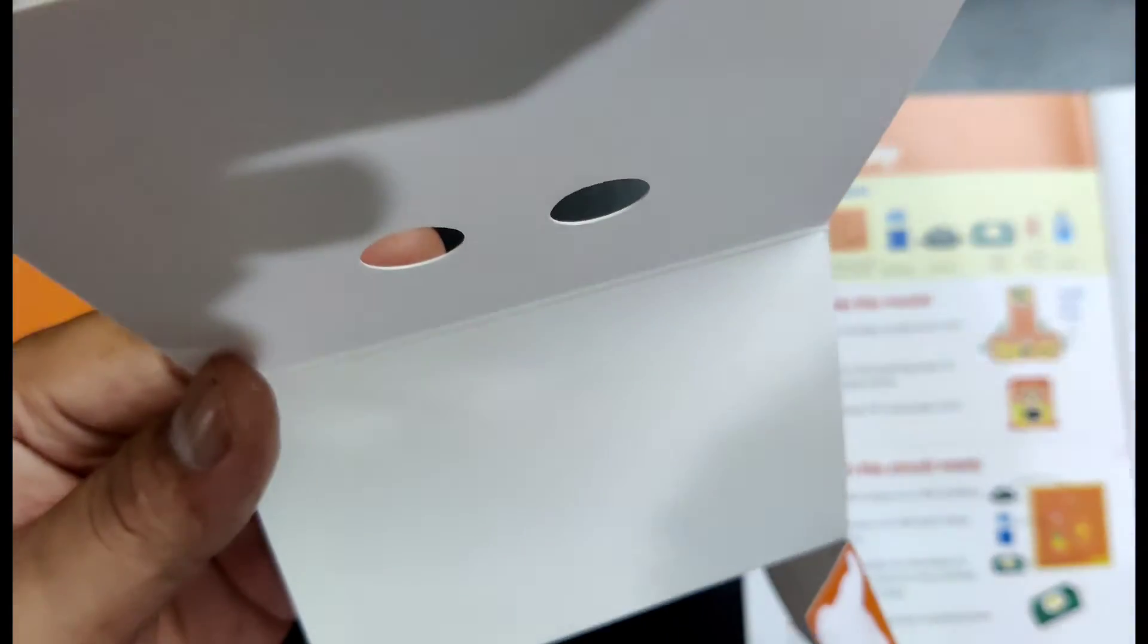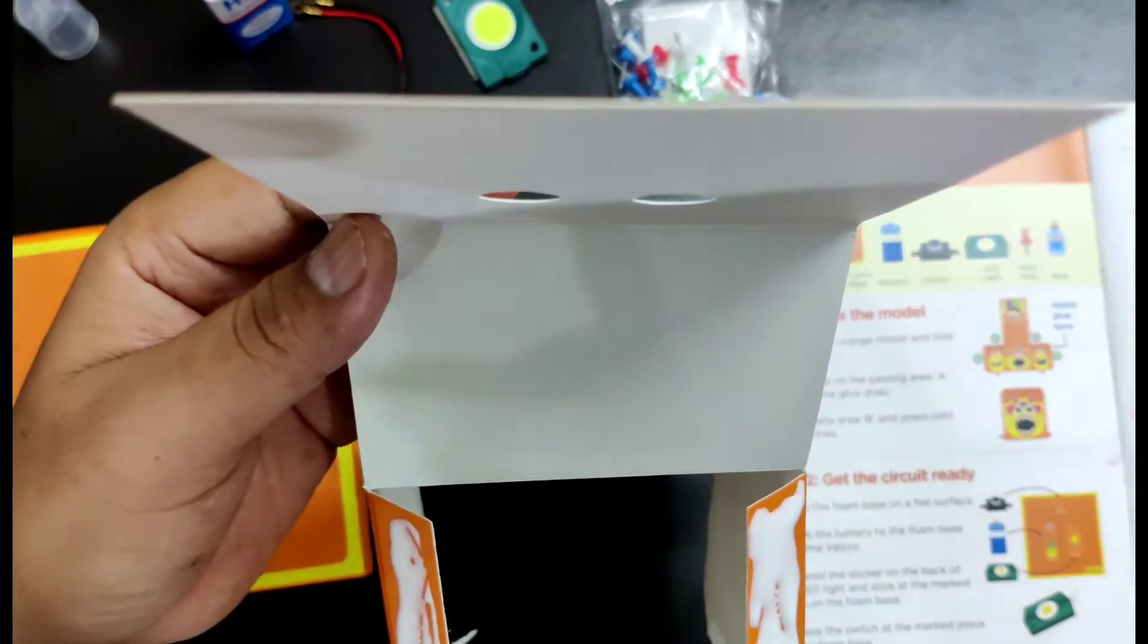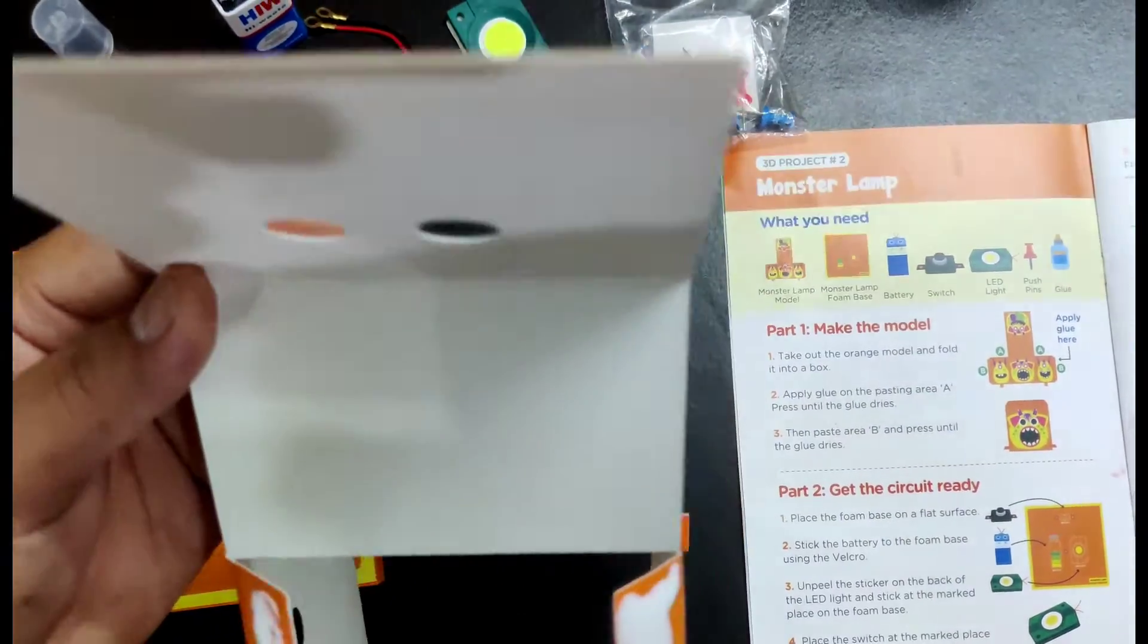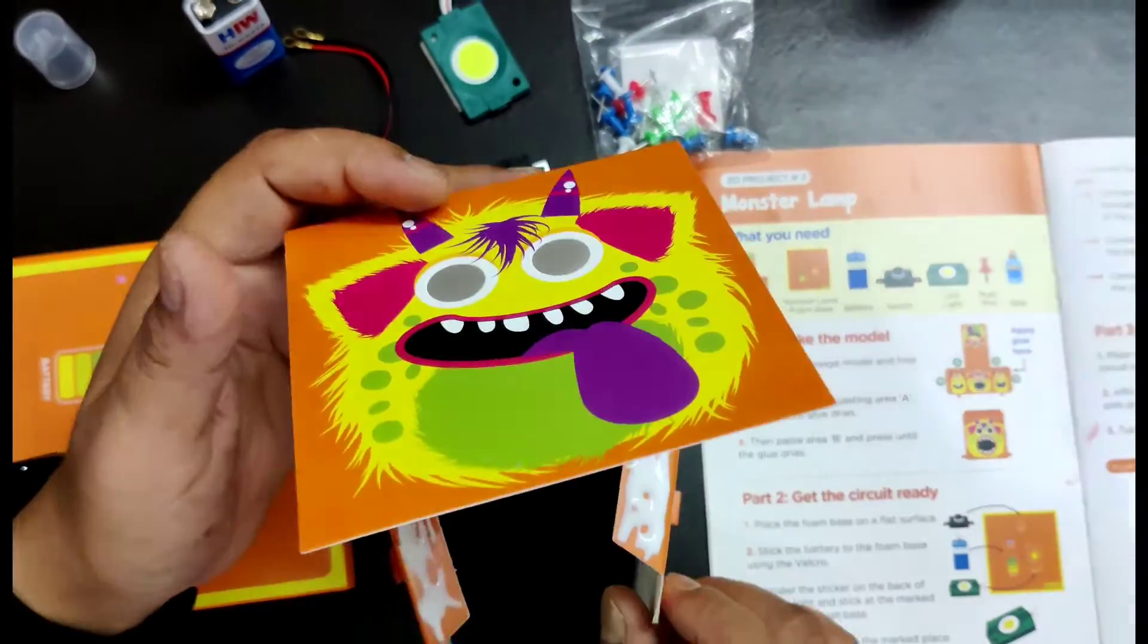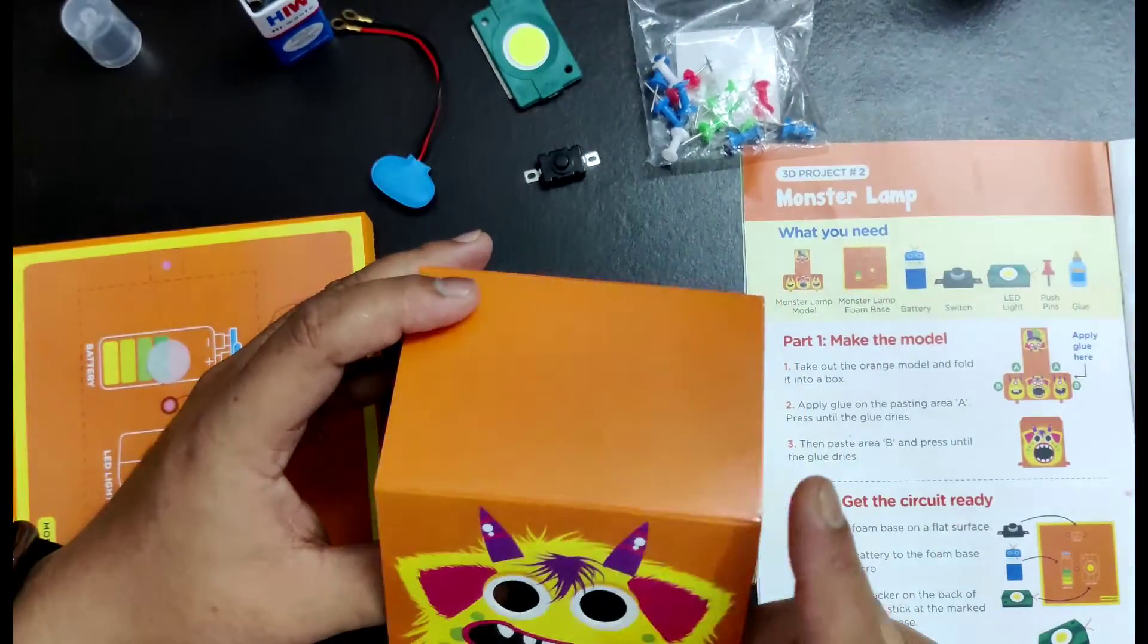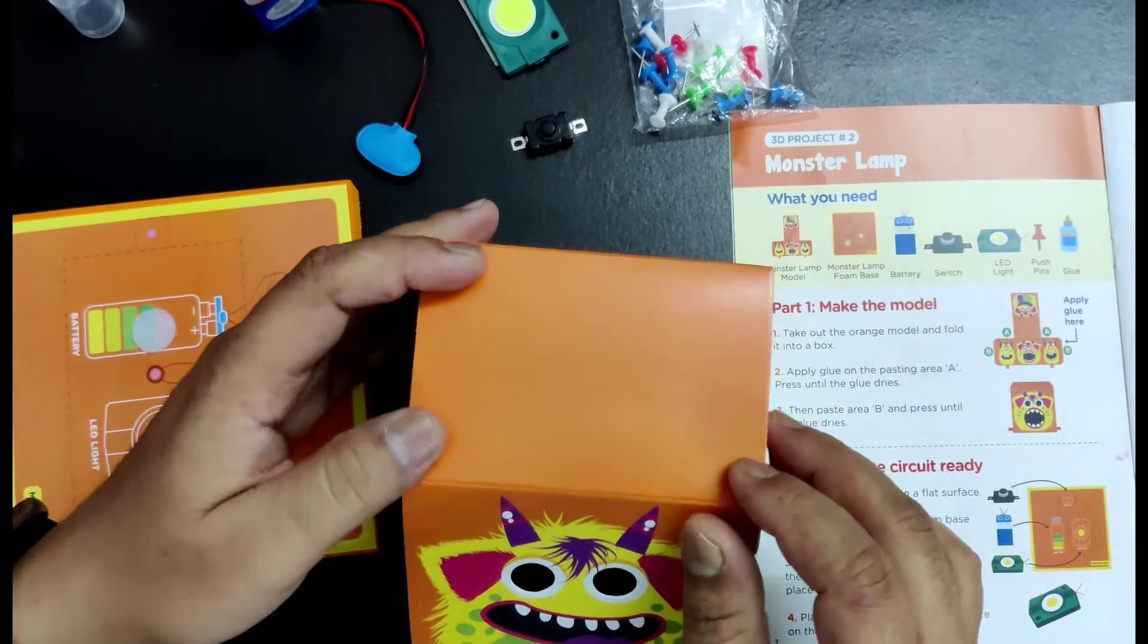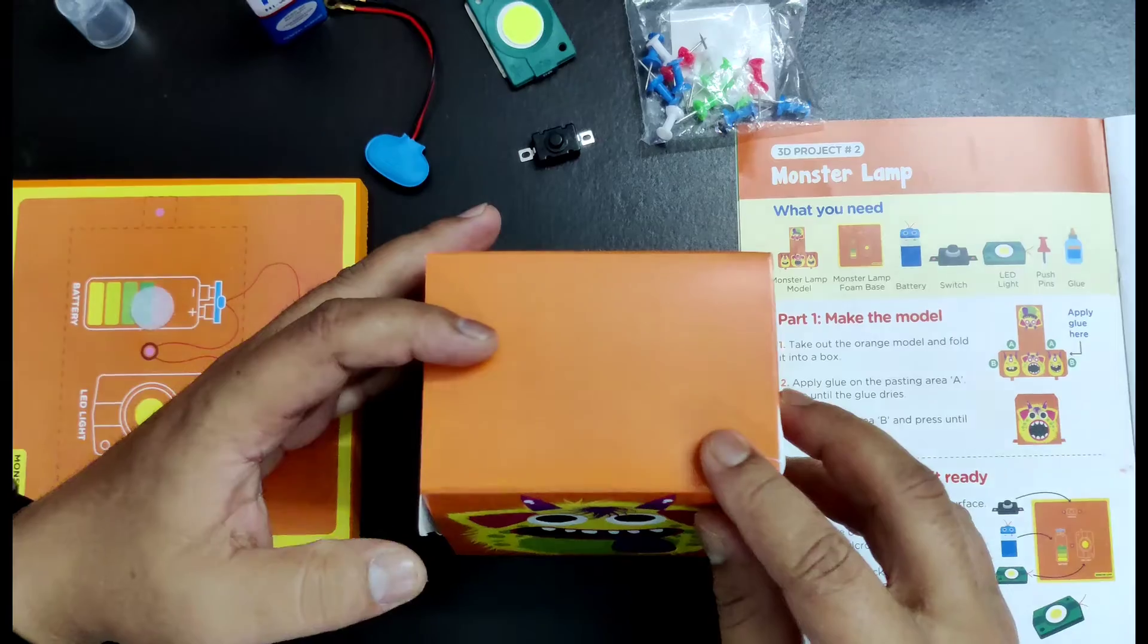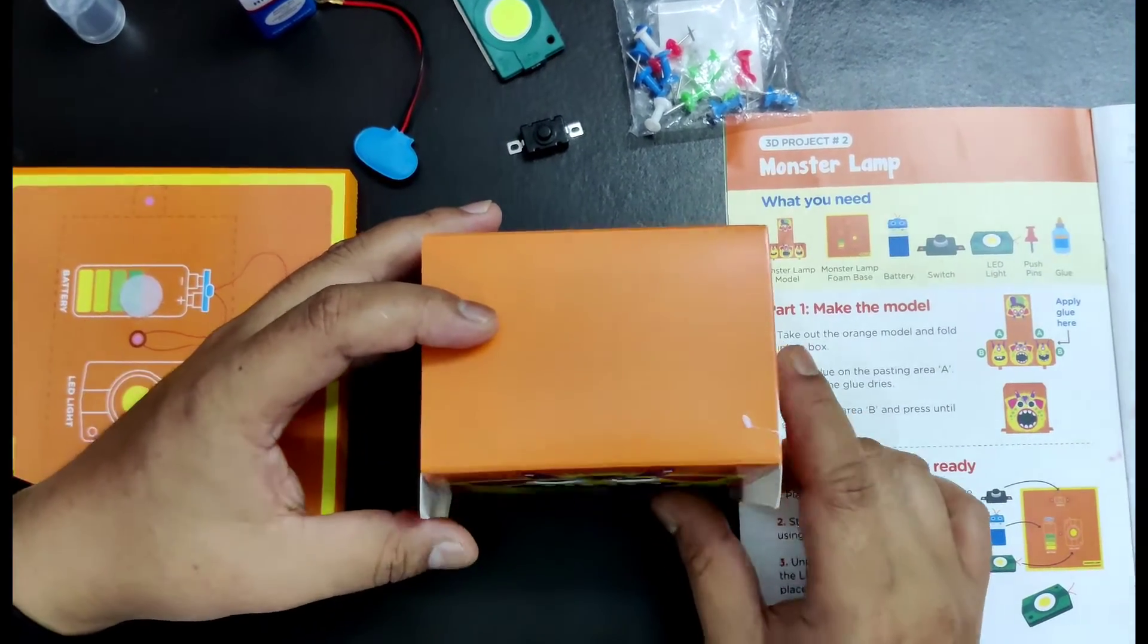All right, so we have to make it a little bit dry. Now let's glue it up. Glue, glue, glue it up. Okay, so our monster lamp is getting ready and getting dried.